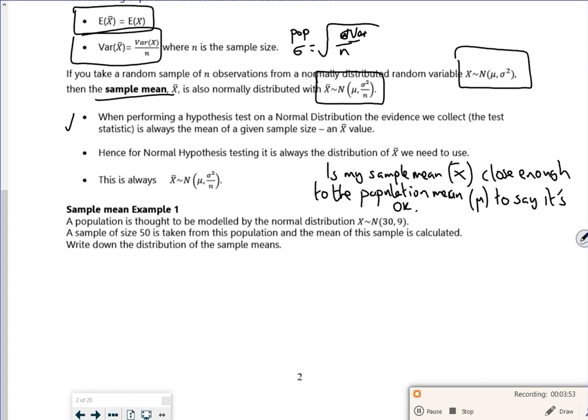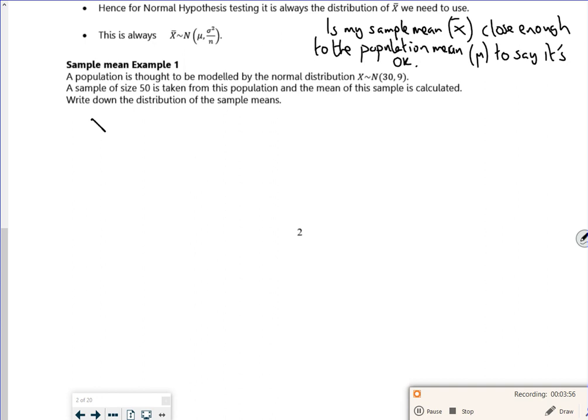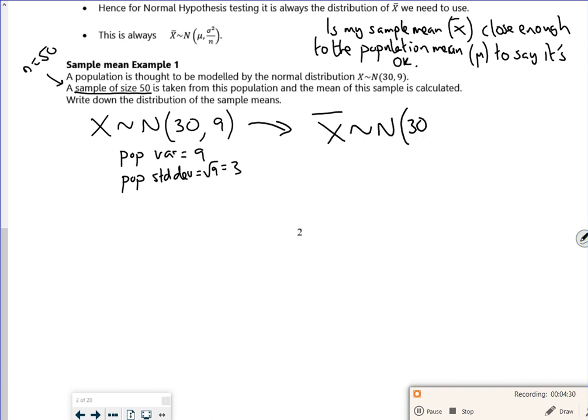So let's have a look at this question here, just setting it up. I know that X follows a normal distribution of 30 comma 9, so I know that the population variance is 9, so the population standard deviation is √9, which is 3. Now it tells me there's a sample size of 50, so n = 50. What I'm going to do is transform this into the sample distribution, so you get x̄. The mean stays the same from the central limit theorem, and this becomes 9 over 50.